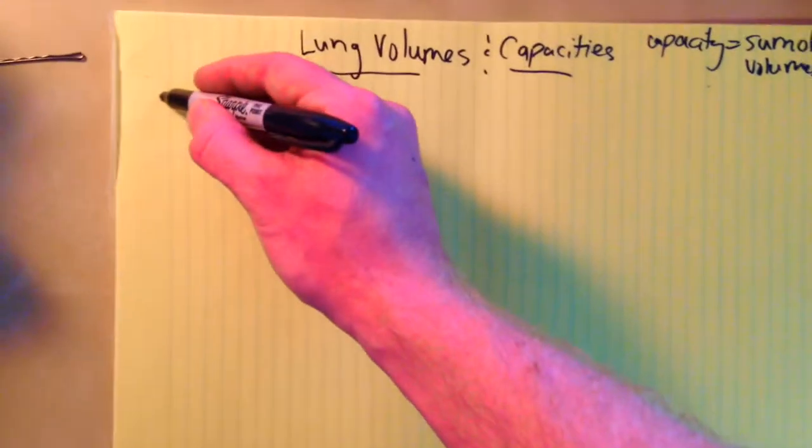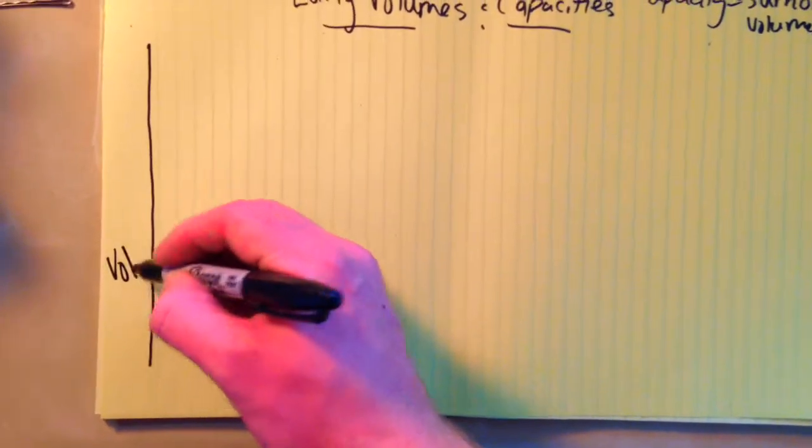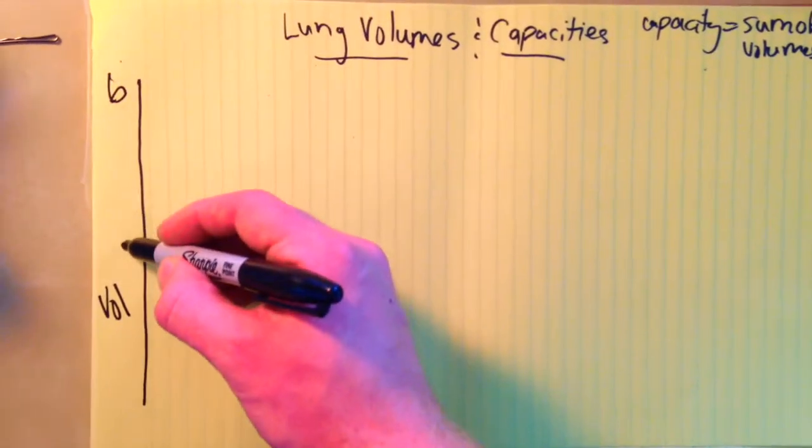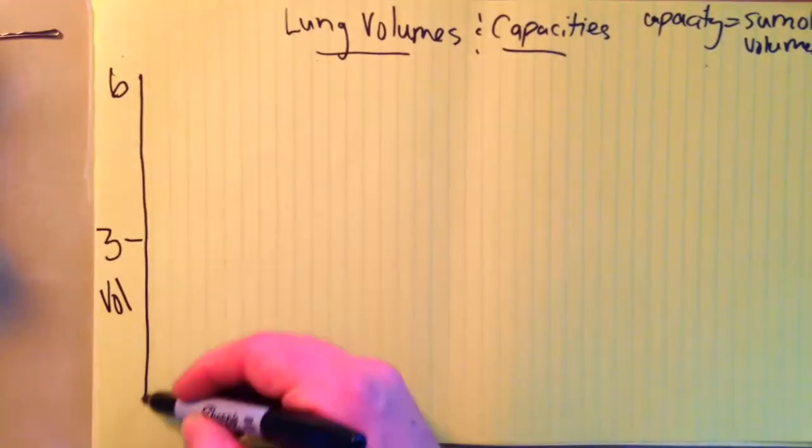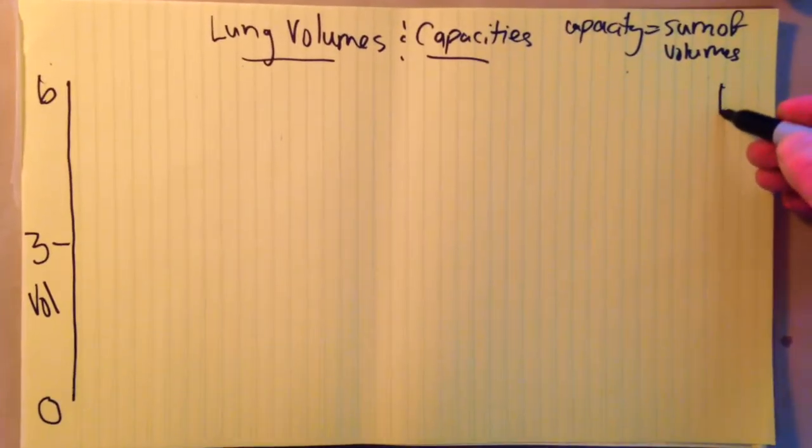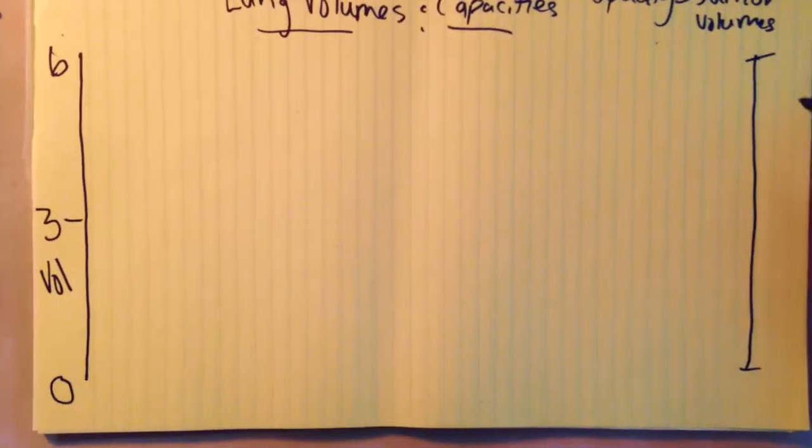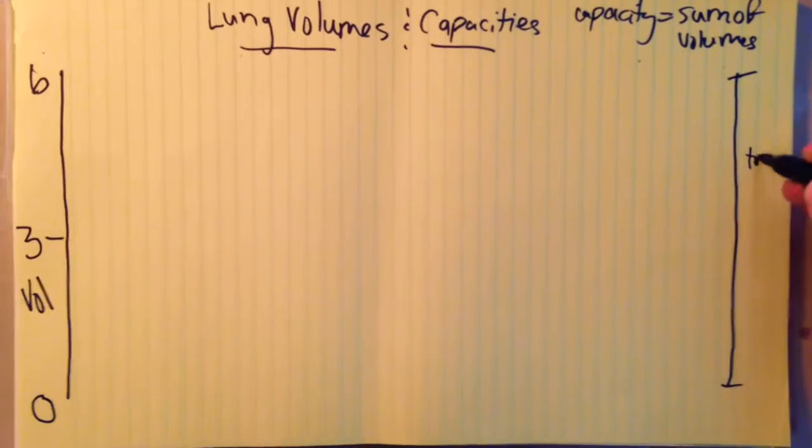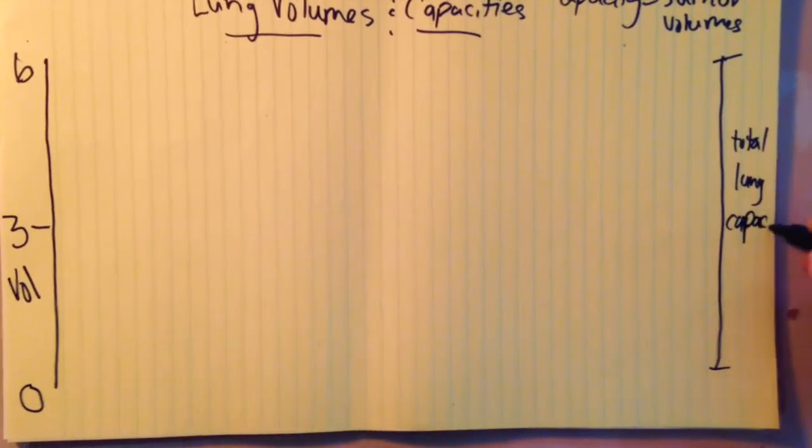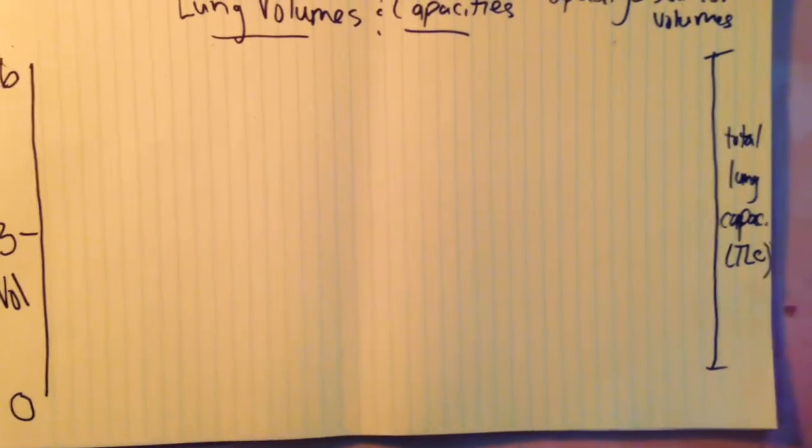So to start, let's just draw a y-axis and this is volume. In a typical 70-80 kilogram man, lungs are about 6 litres in volume. So the easiest one to draw is the total lung capacity. That's essentially the whole thing. Total lung capacity, or your TLC. That's on the one side here.